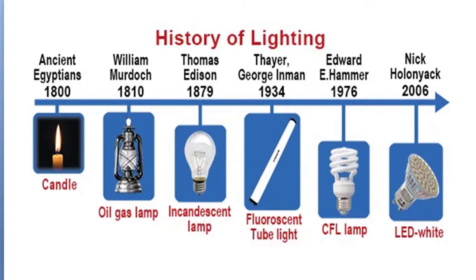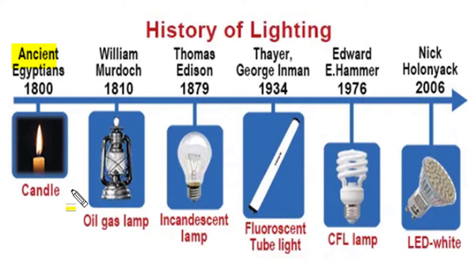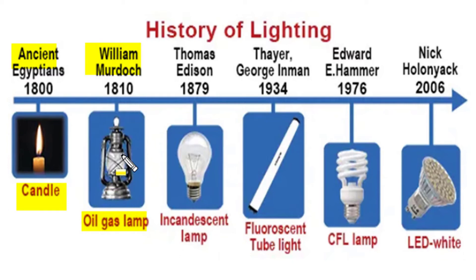It was known to ancient people that fire not only provides heat and warmth but can also provide visible sensation in dark night conditions. Ancient Egyptians developed the first clean, safe, controlled, and cool light sources. Candles and wax candles were used initially to produce light. Soon William Murdoch produced oil and gas lamp lanterns where flames produced lighting sensations.